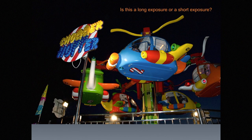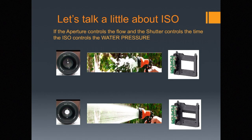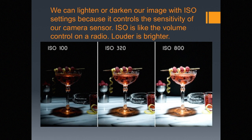Now let's talk a little bit about ISO. You've probably heard about the ISO setting in your camera. If the aperture controls the flow of light and the shutter controls the time of the light, the ISO controls the pressure — like water pressure. We can lighten or darken our image with ISO settings because it controls the sensitivity of our camera sensor. ISO is like the volume control on a radio — louder is brighter. When the ISO is set to 100, it's a fairly dark image, and when it's set to 800, it's a bright image.